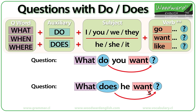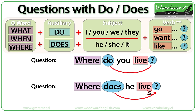These question words go before the auxiliary DO or DOES, as in these examples: What do you want? What does he want? Remember there is no S after the verb in questions. Where do you live? Where does he live?